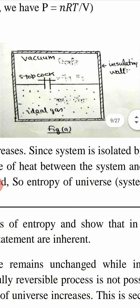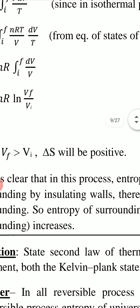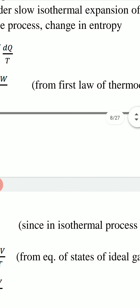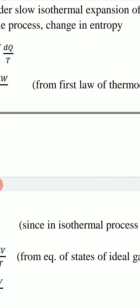Now we want to find the change in entropy. The formula for change in entropy is dS = dq/T — if heat dq is absorbed, entropy of the system increases by dq/T. But this definition is only for a reversible process and is not applicable to this irreversible process.